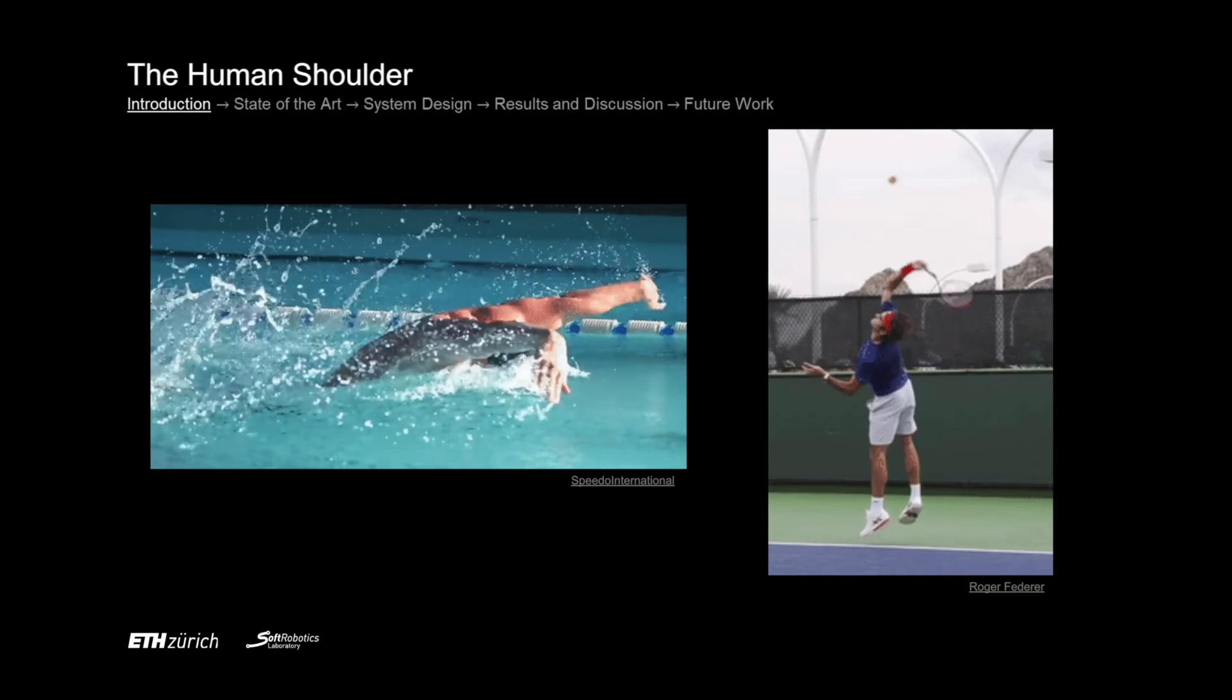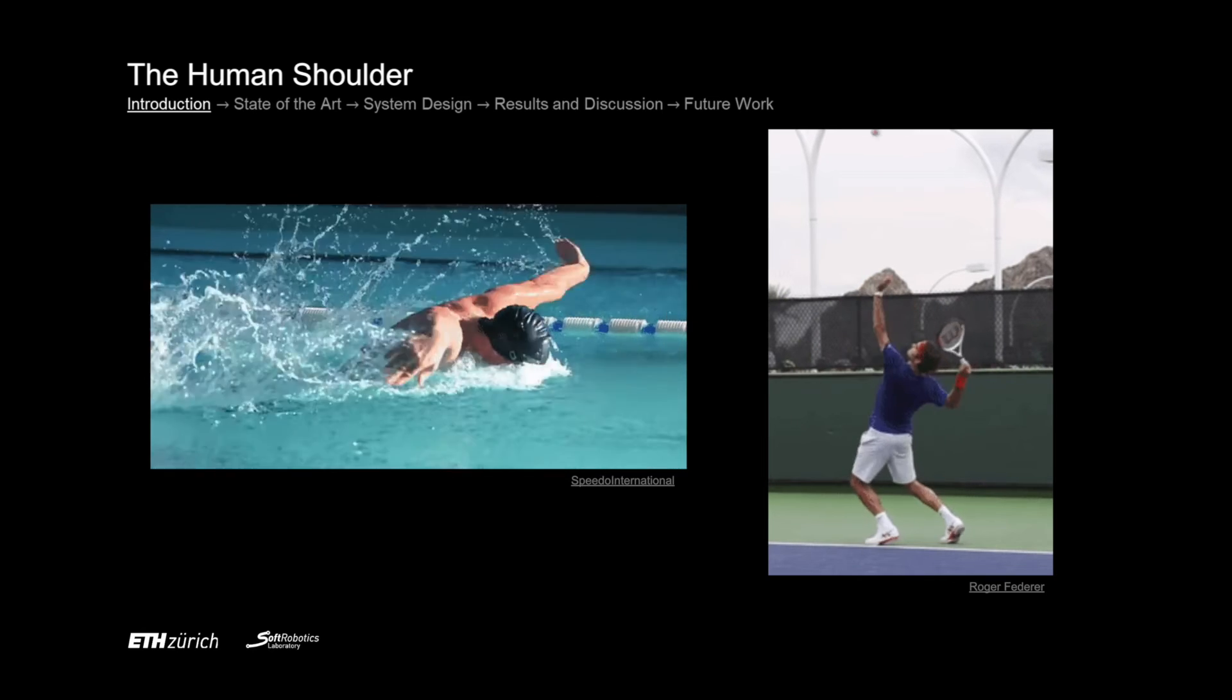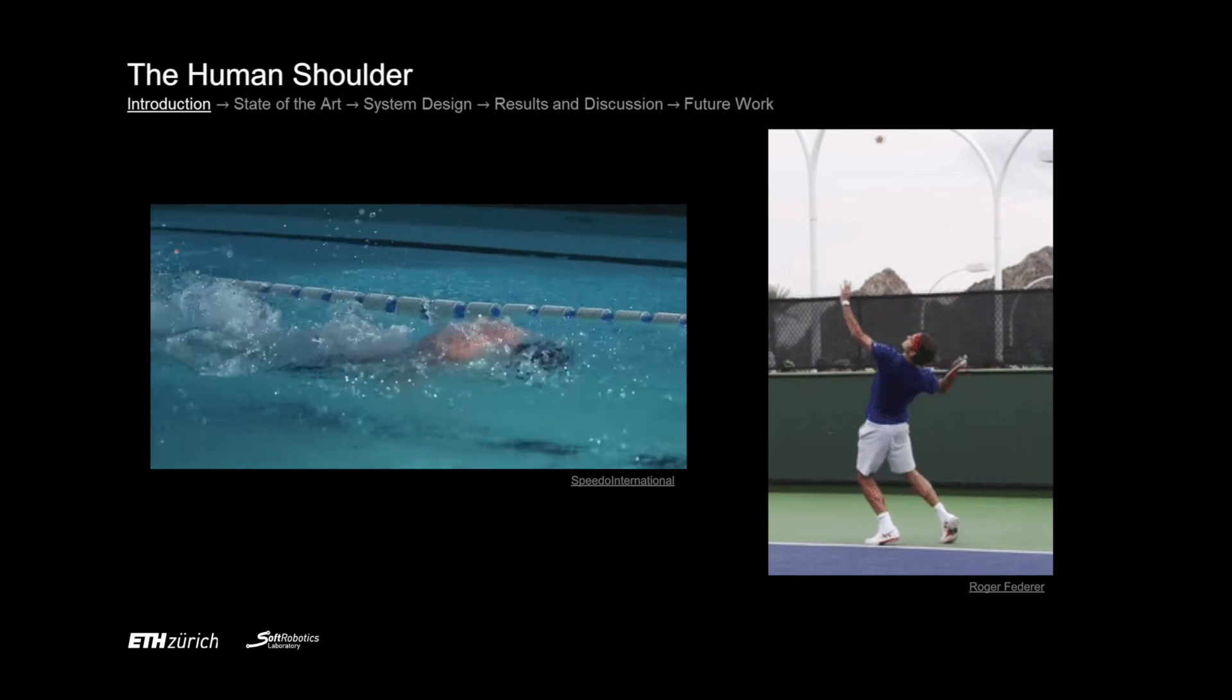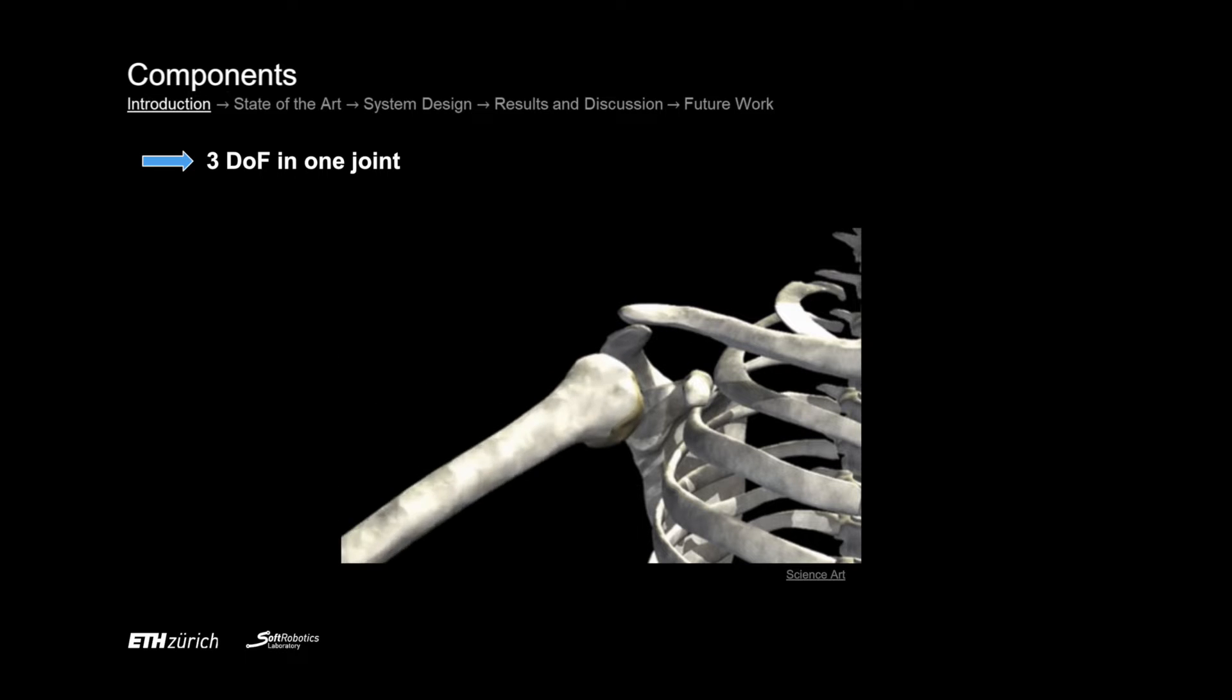In fact, for this work we looked at the human shoulder which is the most complex and flexible joint in the human body. It enables us to do all sorts of complex tasks like playing tennis and swimming. The core component is a glenohumeral joint which is a ball and socket that allows multiple degrees of freedom in a single joint.